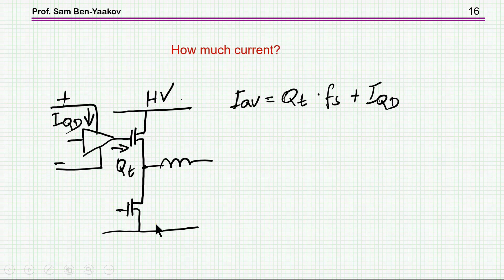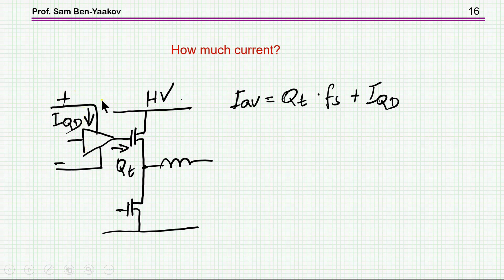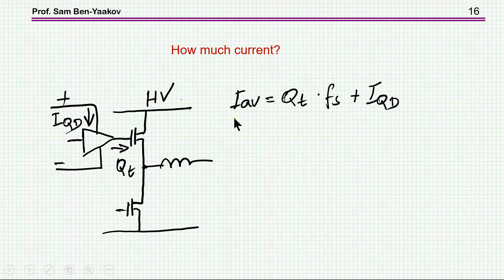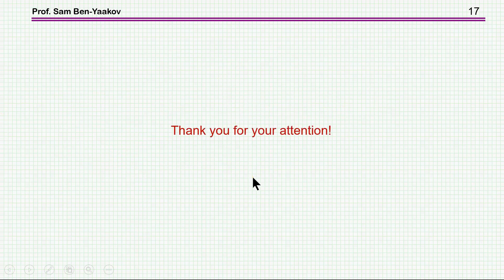As for the current required from this power supply, it has two components: first, the operating current of the driver itself; second, the charge delivered to the gate. The total gate charge Q_g is found in the datasheet. The average current needed from the power supply is therefore Q_g multiplied by the switching frequency, plus the driver's operating current.